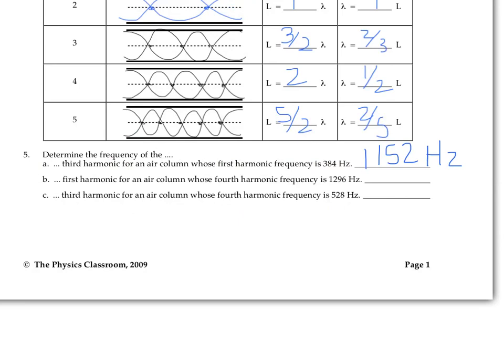For part B, we have to do something similar, but just in reverse. We're told the fourth harmonic frequency is 1296, and we're looking for the first one. The first one has to be one-fourth as much as the fourth one. So if you take 1296 and divide it by four, you get 324 for your fundamental or first harmonic.